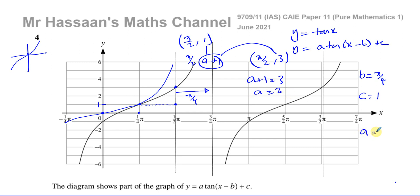That means if a plus 1 is equal to 3, a must be equal to 2. So we know a is equal to 2. So that's how we can work out the values of a, b, and c.